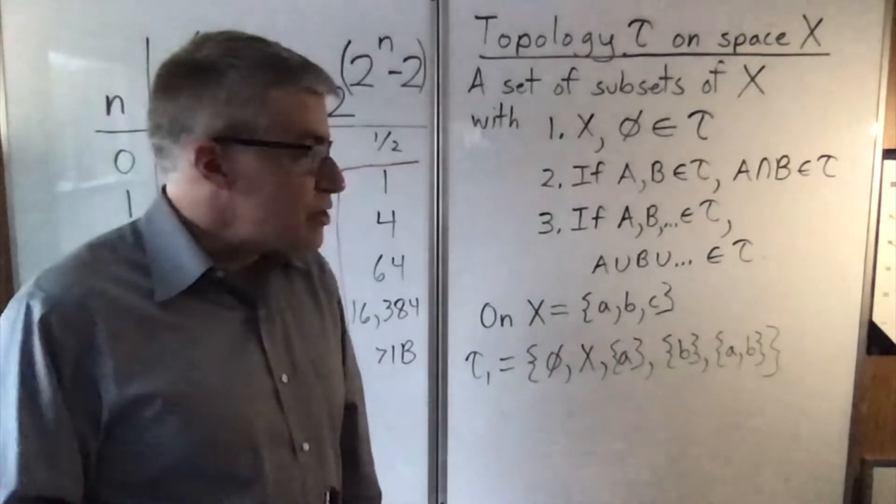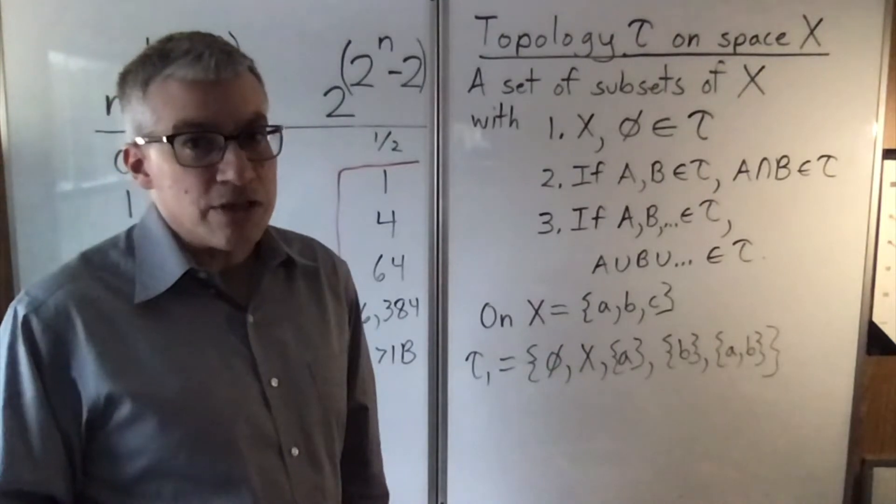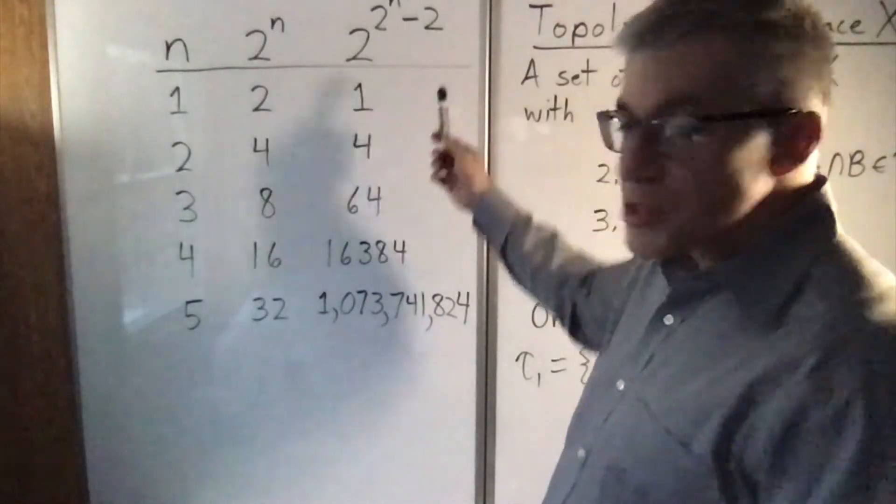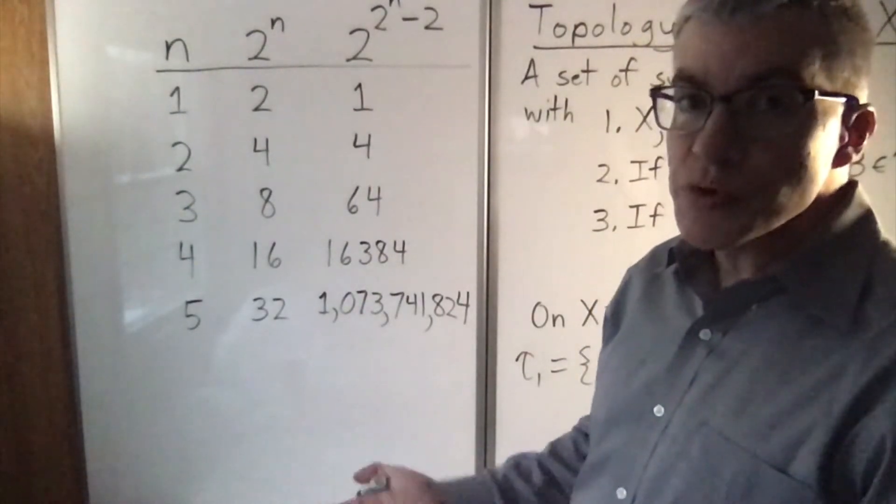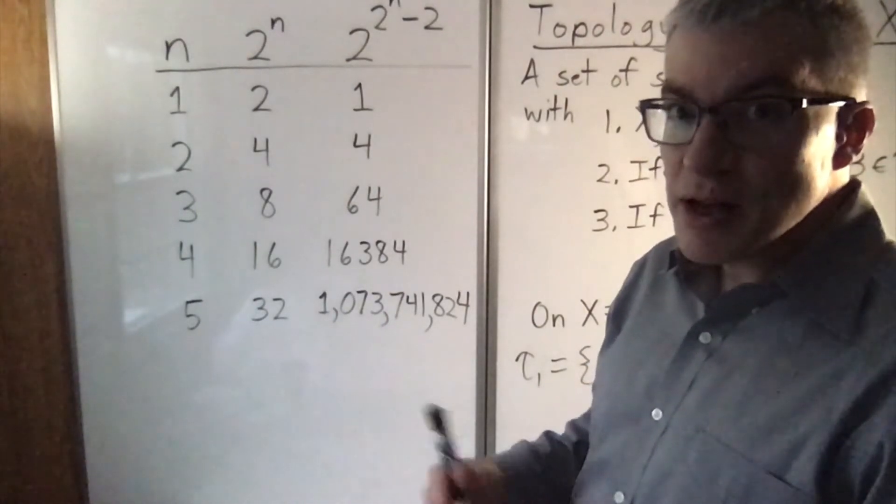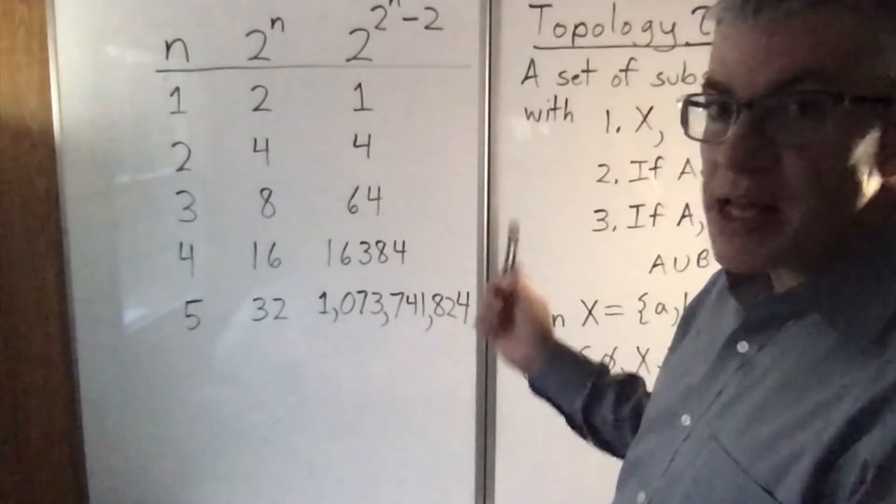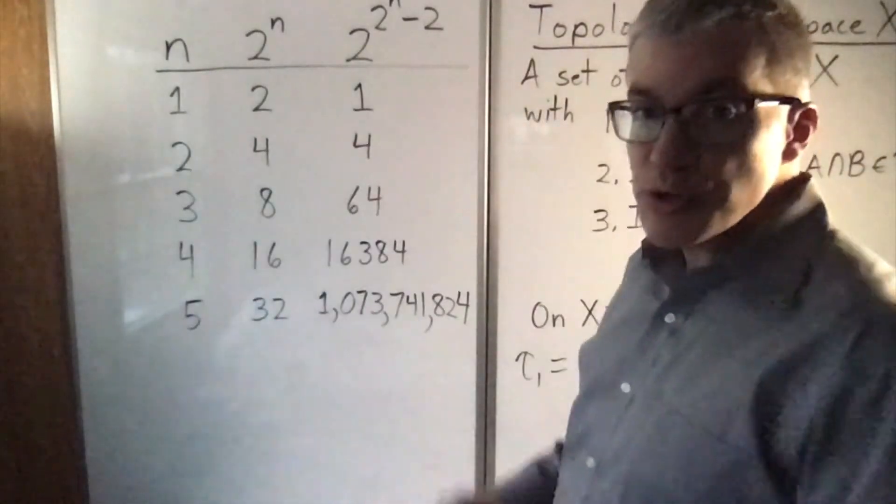But there's a lot of interesting stuff that happens in between, and that's the subject of topology. So these numbers are how many ways you can choose some subsets of a set when you have to include the empty set and the entire set. That's what the minus two is about.